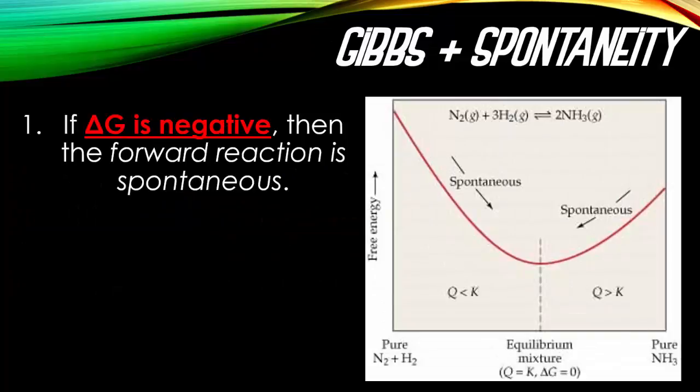Based on the earlier slide, if you have a delta G with a negative value, meaning a spontaneous reaction is occurring, you're going to be going downwards. Remember, delta G means change in energy, so if you are losing delta G, that means you're going to be going down this red graph. As you go down the red line of this graph, you will notice you're losing free energy, which is what a negative delta G means.